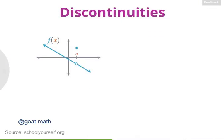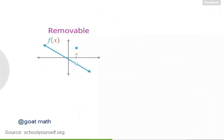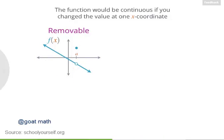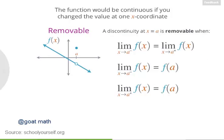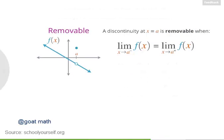The discontinuity we've been looking at so far is called a removable discontinuity. We'll also be looking at what are called jump and essential discontinuities. A discontinuity is called removable if you can make the function continuous by changing the value of the function at a single point. This function has a removable discontinuity here, because if we change the value at this point to the value down here, then we can make the function continuous. So a discontinuity is removable when the left and right limits equal the same value.